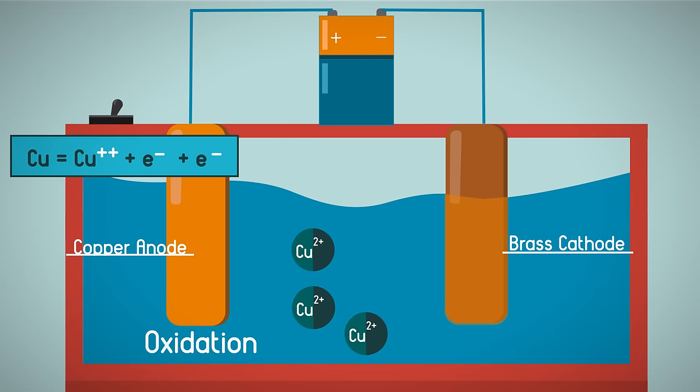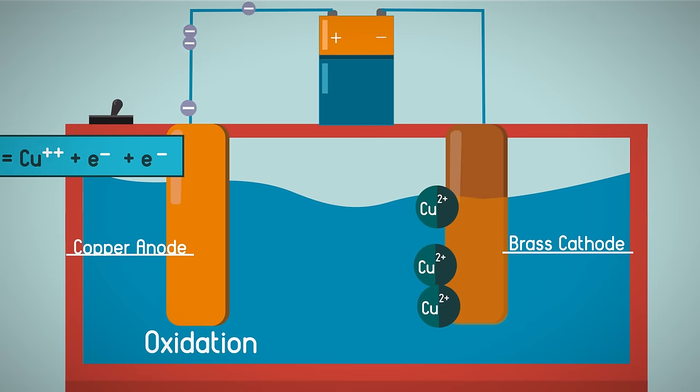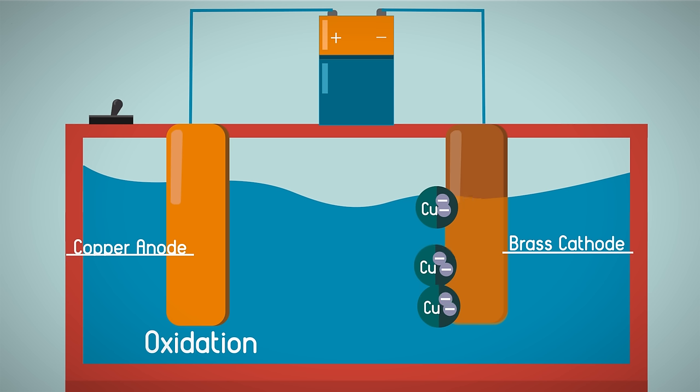So the copper ions move from the anode to the cathode. The copper anode bar gradually dissolves to replenish the copper ions in the electrolyte solution, so the solution stays at the same concentration.